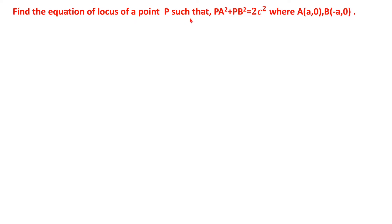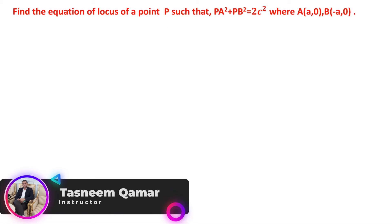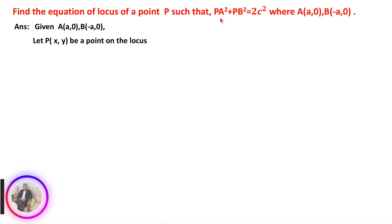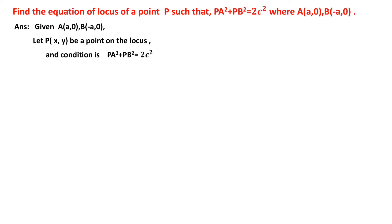Find the equation of locus of a point P such that PA² + PB² = 2c², where A is (a, 0) and B is (-a, 0). These two points are given and we need to find the locus of a point P. Let us take P as (x, y) as any point on the locus. The condition given is PA² + PB² = 2c², so we need to find PA² and PB².